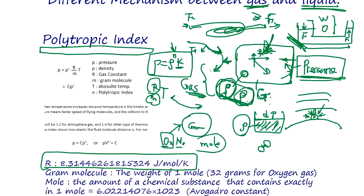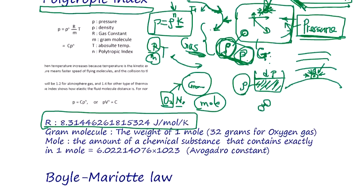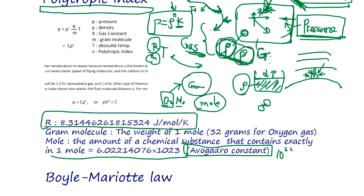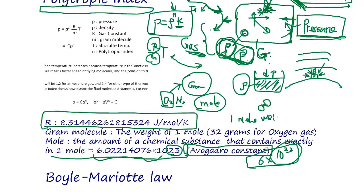Avogadro's constant is the number of molecules per mole — approximately 6 times 10 to the 23. This is one mole, and the molar mass depends on the gas. For oxygen, it's about 32 grams per mole. That's the M in our equation.